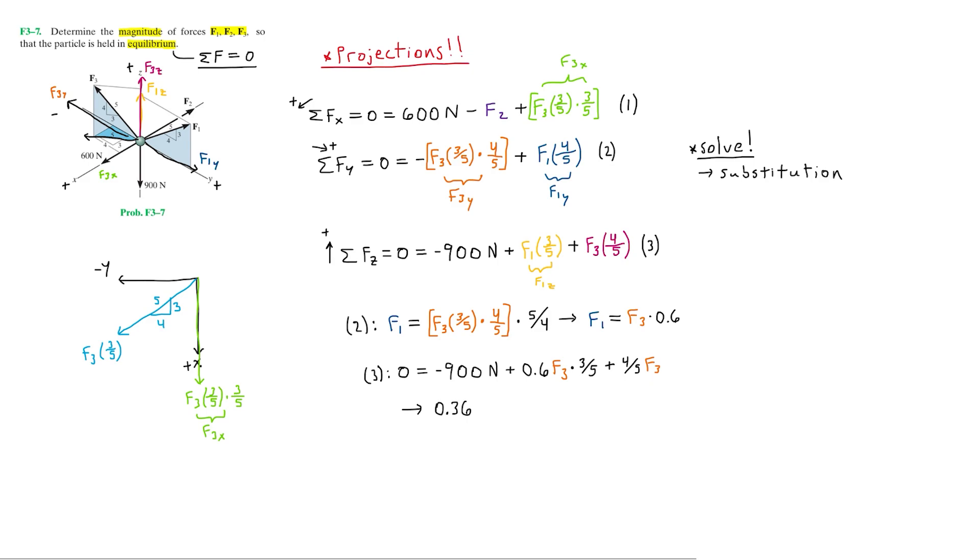Now I'll just go ahead and simplify the 0.6 times three-fifths and add the negative 900 newtons to the left side. So this will leave us with 0.36 F3 plus four-fifths F3 is equal to 900 newtons. And now we can go ahead and add these two like terms, which ends up being 1.16 F3, and this is equal to 900 newtons. And so here we can divide the 1.16 to the right side, which will leave us with force F3 being equal to roughly 775.86 newtons.